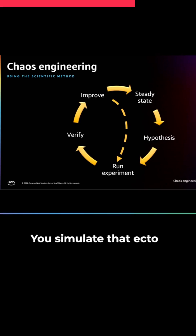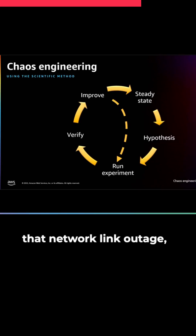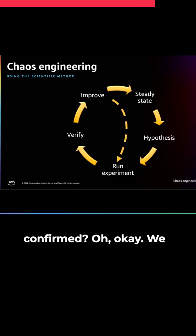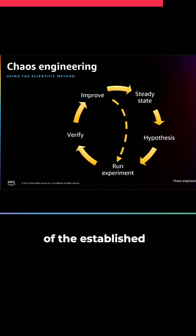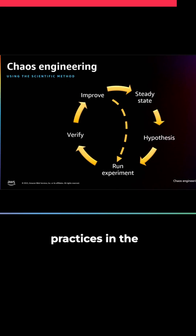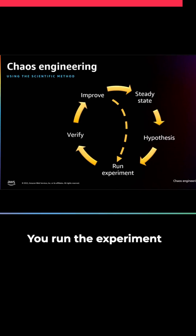So you run the experiment. You simulate that EC2 failure, you simulate that network link outage, and then you validate and verify: was the hypothesis confirmed? If the hypothesis was not confirmed, we experienced some sort of outage. We went outside of the established parameters, we did not maintain steady state — you need to improve. You improve by redesigning, applying the best practices in the reliability pillar, and then you test it again.